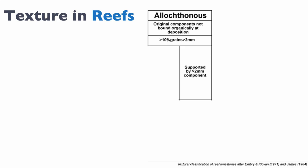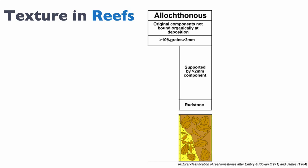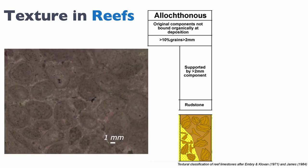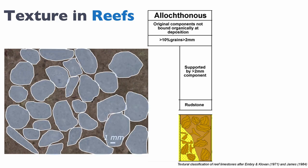If we are supported by grains larger than two millimeters, then we're looking at what is known as a rudstone, where the large grains form the framework. Here's an example of a rudstone — these grains basically form the framework of the rock, and in between these grains we have the smaller matrix that can either be grainy or muddy.